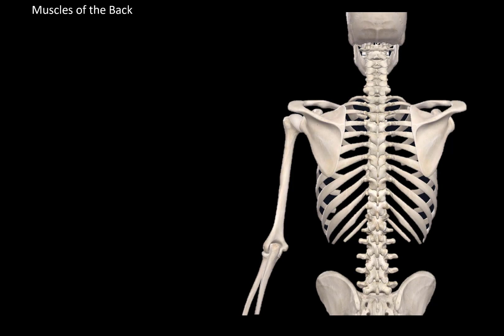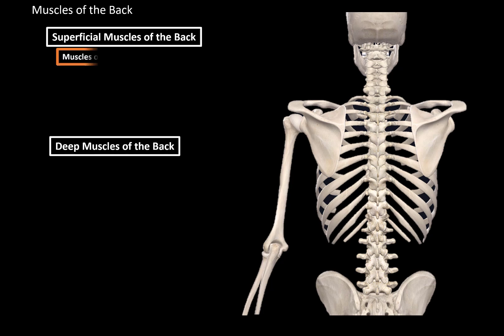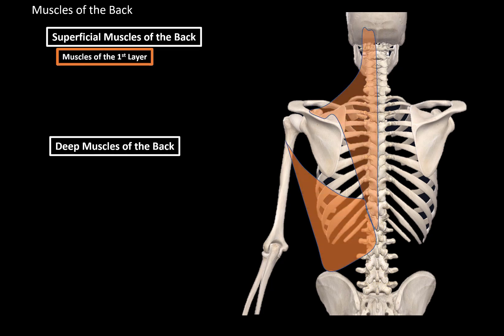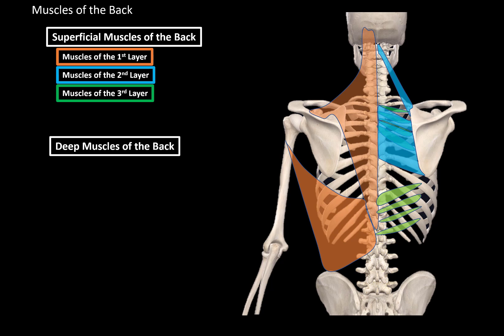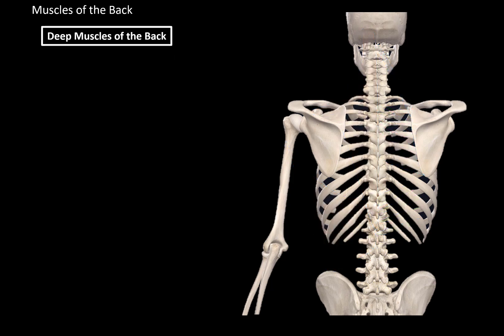Generally, the muscles of the back consist of the superficial muscles and the deep muscles. Superficial muscles consist of the trapezius and latissimus, which are the first layer. The second layer are the rhomboid major, minor, and levator scapula. The third layer consists of the serratus posterior superior and inferior. And when you remove these three layers, you'll finally get to the deep muscles of the back.